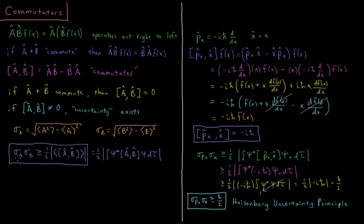So sigma A times sigma B, according to this relationship, has to be greater than or equal to one half of the magnitude of the expectation value of their commutator. So this is going to be equal to one half times the absolute value of the integral of psi star times the operator of the commutator of A and B, so AB minus BA, acting on psi, integrated over all space.